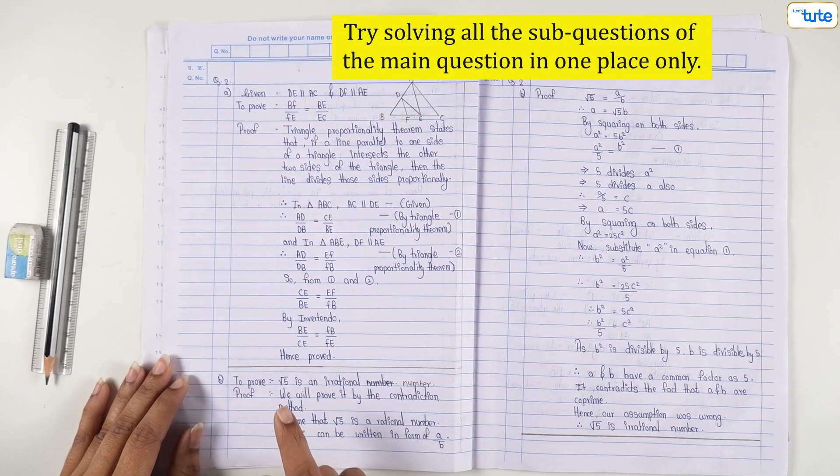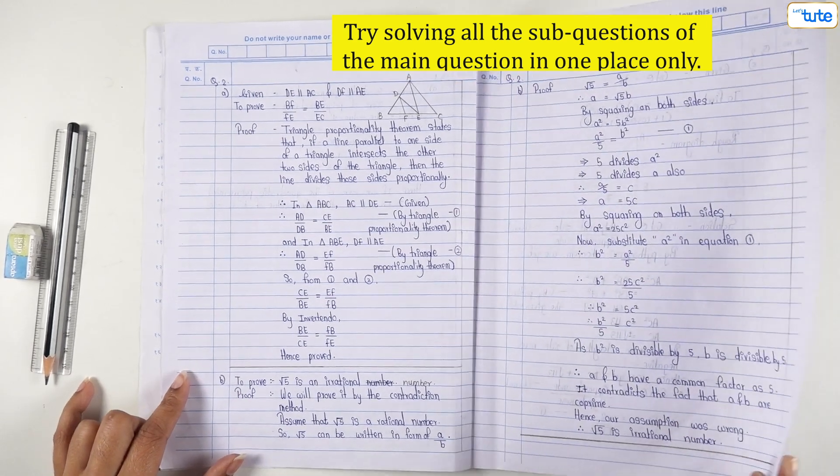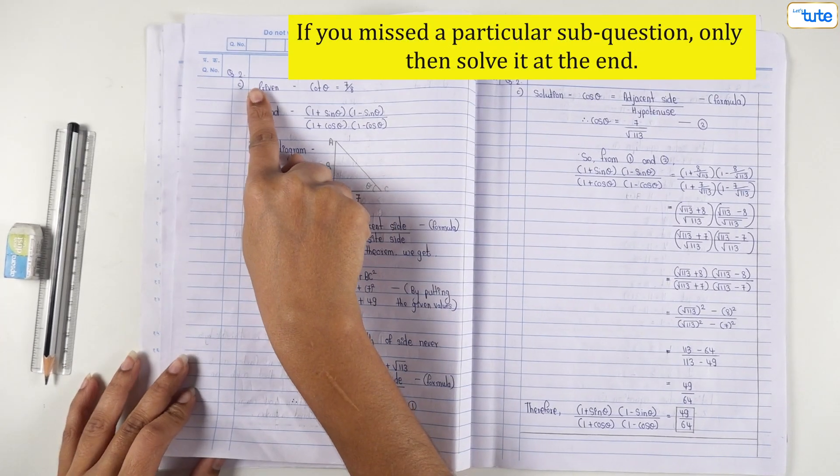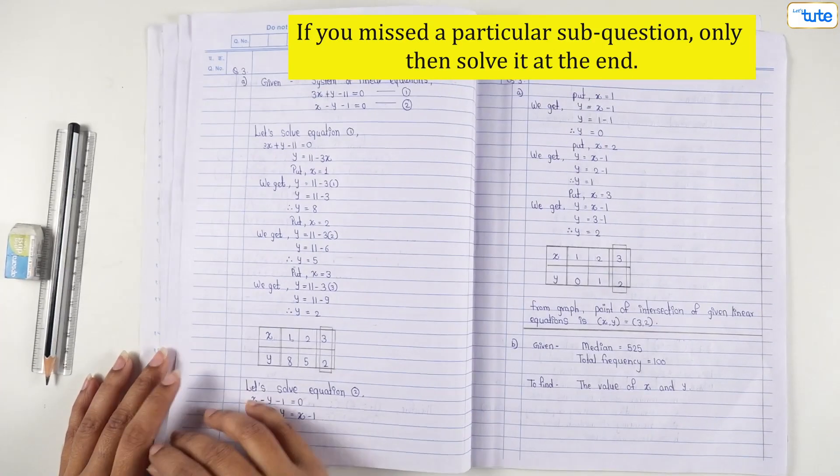Try solving all the sub-questions of the main question in one place only. If you have missed out on a particular sub-question, only then solve it at the end but mention the question number correctly.